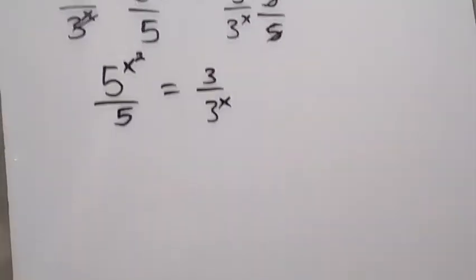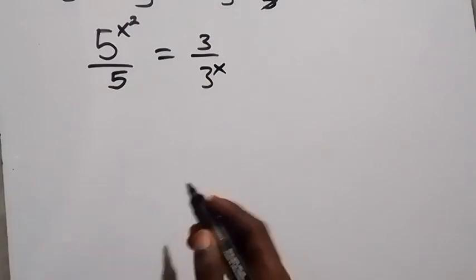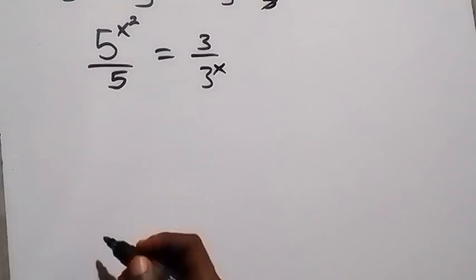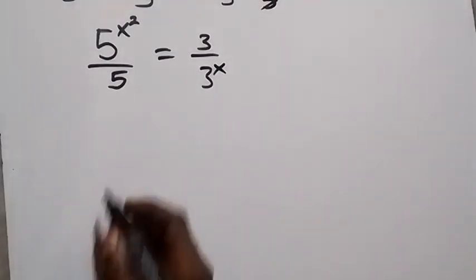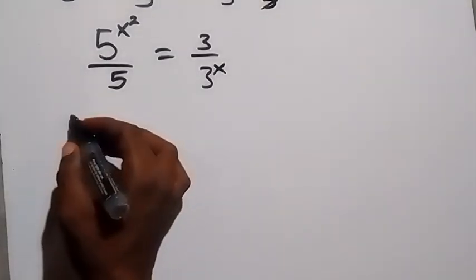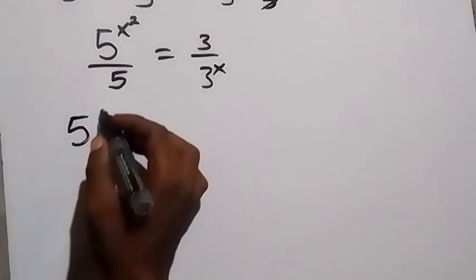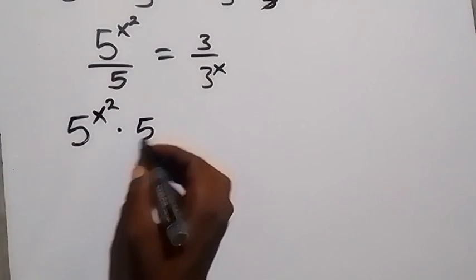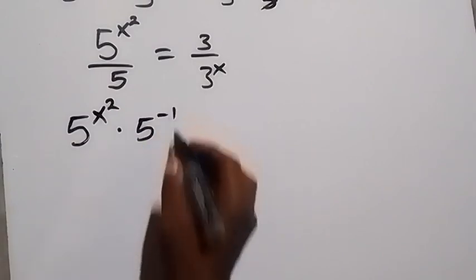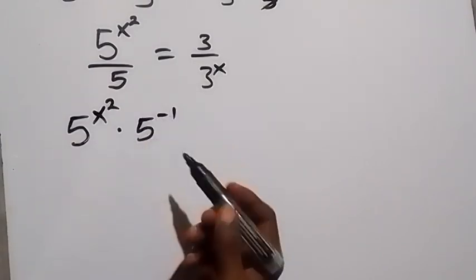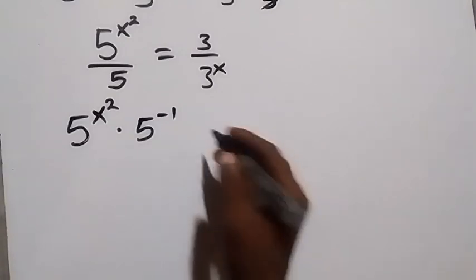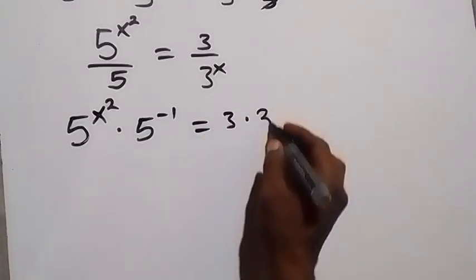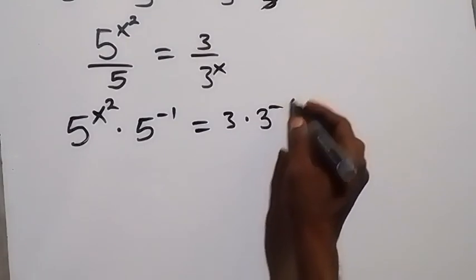From here, in the next step, we can separate this and write it again in another way applying the law of indices. This can be written as 5 raised to the power x squared multiplied by 5 raised to the power minus 1, because 1 over 5 is the same as 5^(−1), which is equal to 3 multiplied by 3 raised to the power minus x.